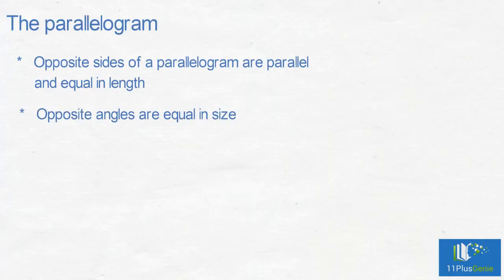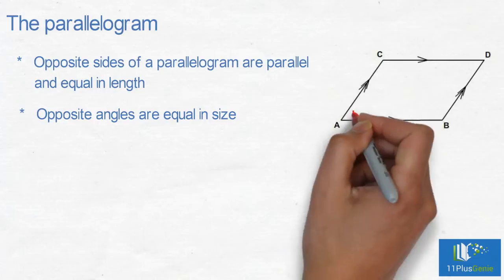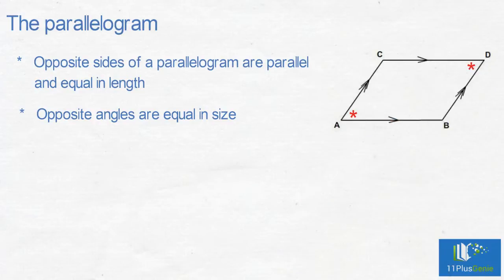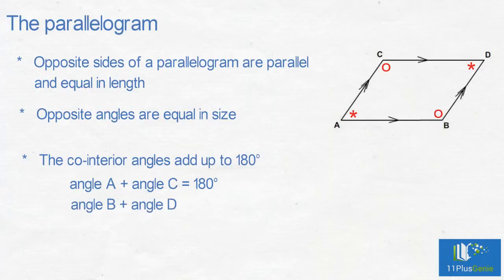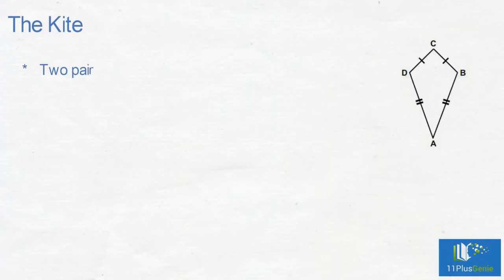Opposite angles of a parallelogram are equal in size, so angle A equals angle D and angle C equals angle B. The co-interior angles add up to 180 degrees: angle A plus angle C equals 180 degrees, and angle B plus angle D equals 180 degrees.